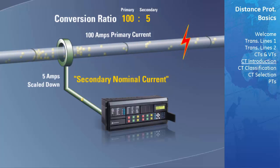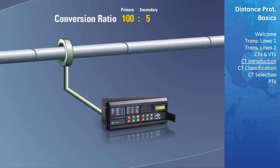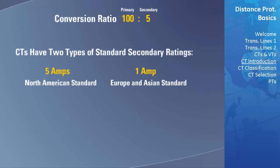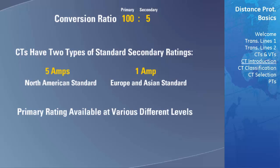If a fault were to occur on this phase that increases the primary current to 200 amps, then 10 amps would be passed to the relay through the secondary windings, consistent with the ratio. CTs have two types of secondary ratings: 5 amps and 1 amp respectively. 5 amps is typically the North American standard, while 1 amp is used in Europe and Asia. Primary ratings are available in various different levels, for example 100, 150, 200, etc.